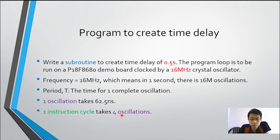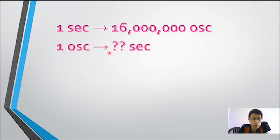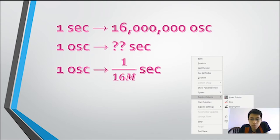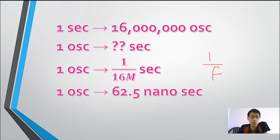The period time — the time for one complete oscillation — takes 62.5 nanoseconds. One instruction cycle takes four oscillations. So we need to divide one over F: 1 / 16 MHz = 62.5 nanoseconds per oscillation.